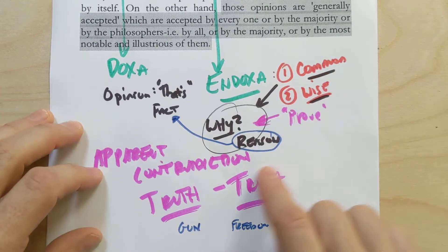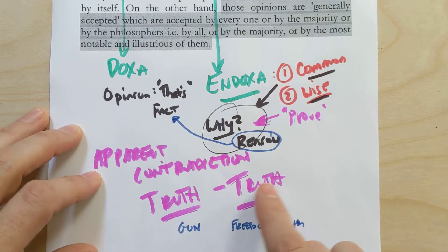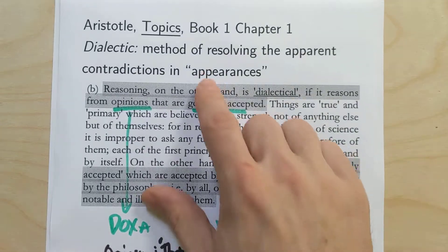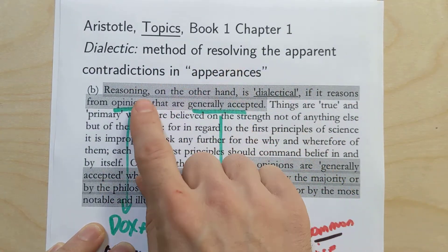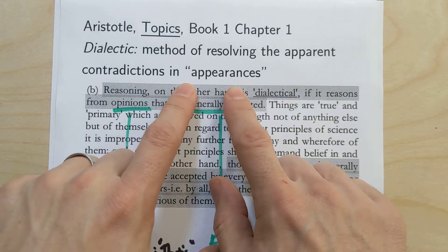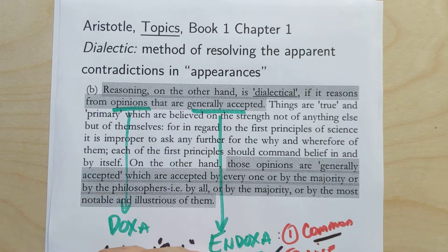Our last video ended kind of abruptly as we were just talking about how truth cannot contradict truth. Just to recap, remember we were talking about Aristotle's dialectic, which was this method of resolving the contradictions that seem to show up in the way things appear to us.